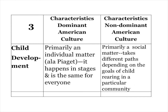Let's look at child development. In the dominant culture, it's primarily an individual matter — according to Piaget, it happens in stages and it's the same for everyone. In the non-dominant culture, it's primarily a social matter, taking different paths depending on the goals of child-rearing in that particular community. This is a big difference between the white middle-class European culture associated with democratic education and those collectivist cultures they may want to engage.